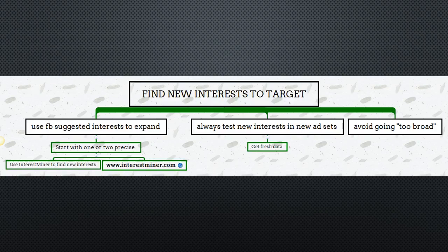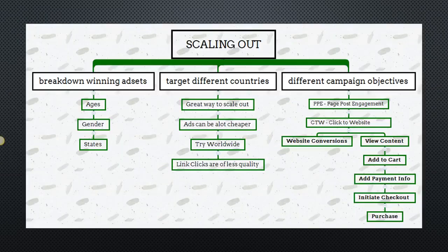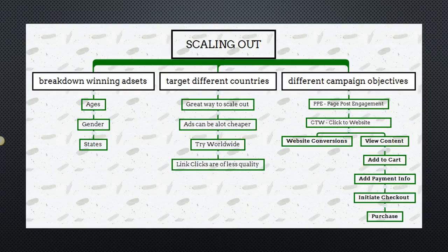The fourth way to scale is by scaling out, which means dissecting your audience in every which way possible. You can do this by breaking down your winning ad sets — go into the reporting section, check the demographics, and see which ages are converting best, which gender, and which states. You can then duplicate the winning ad sets but narrow them down to just the winning demographic.